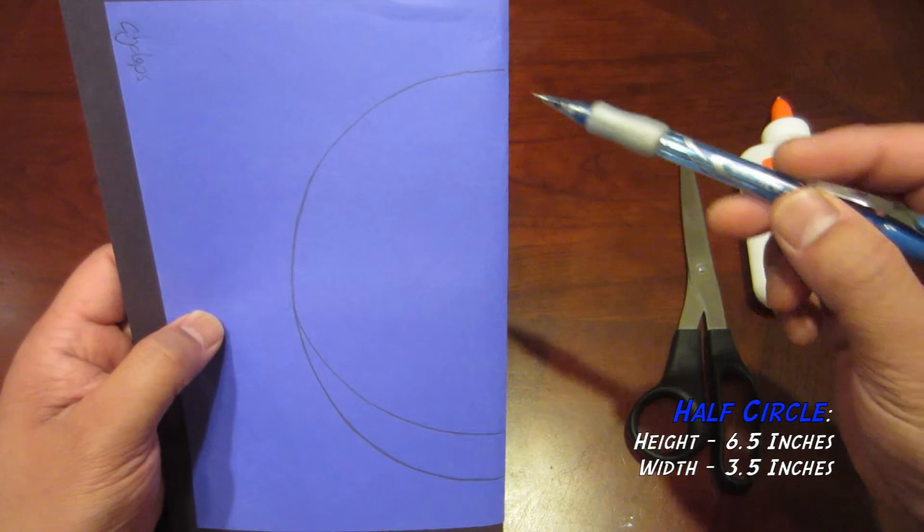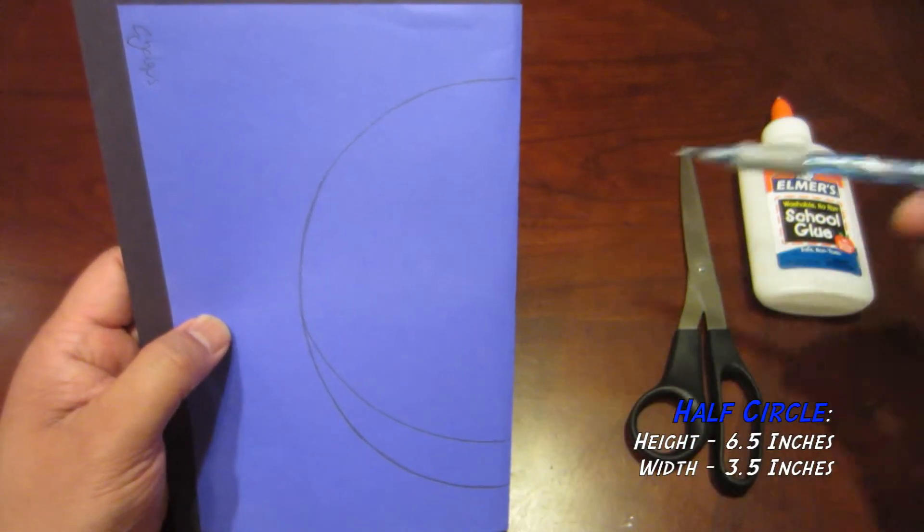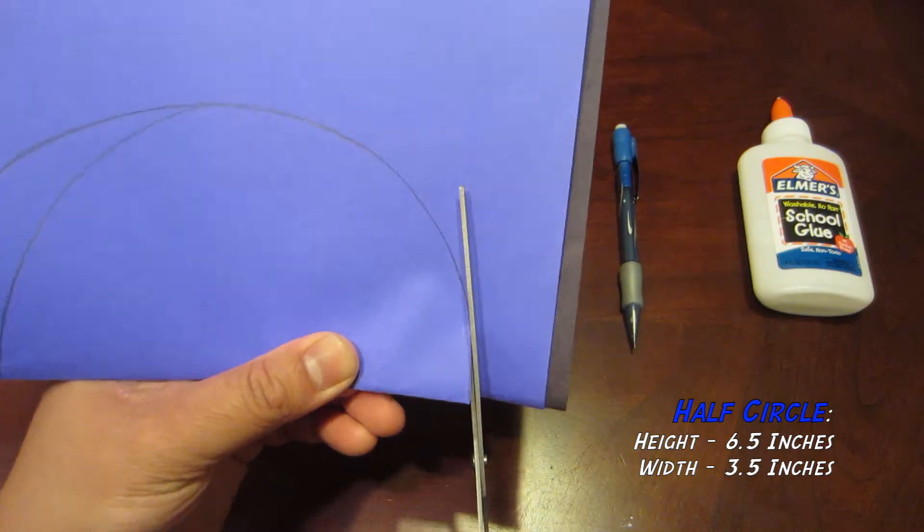Now draw your Cyclops face outline. Measurements are posted. Once ready, start cutting out.